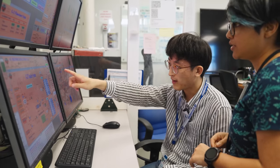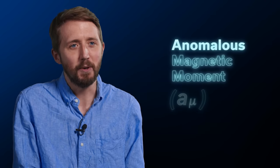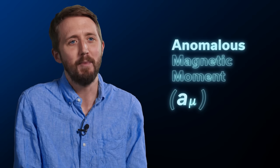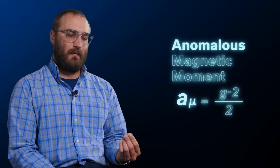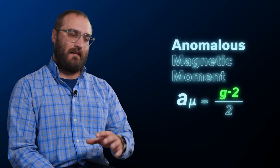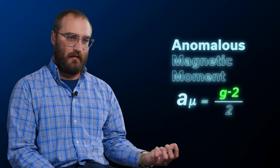In the g-2 experiment, we're measuring what's called the muon's anomalous magnetic moment, which just means it's the part that's different from two. So that's why we say muon g-2, and g is a factor related to the magnetic moment.